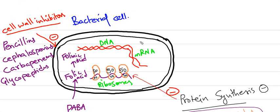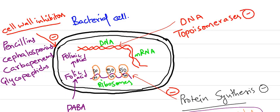Coming to drugs which act on DNA, which inhibit DNA topoisomerases. The drugs which inhibit DNA topoisomerases are Fluoroquinolones like Ciprofloxacin, Norfloxacin, Levofloxacin, etc.